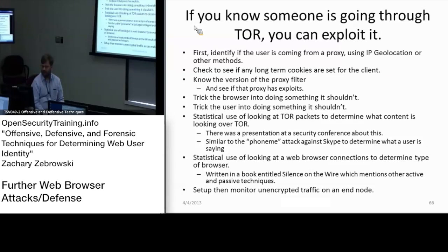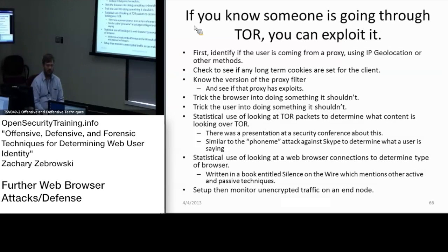You can also look at how a web browser is requesting traffic to possibly determine where a user is browsing. The way IE requests a web page is different from Netscape, which is different from Firefox. In Firefox, images get loaded before the text, whereas in IE the text and tables are rendered first and then images are requested from the server. It's a different type of timing attack to determine information about the web browser.